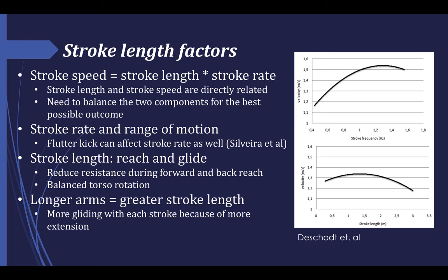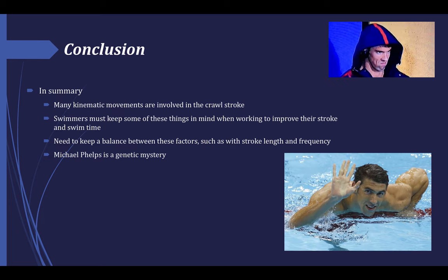Finally, if you have longer arms, you may be in luck. People with longer arms can extend their arm and shoulder further in the reach phase of the crawl stroke, meaning they get more gliding. An example of someone who has this is Michael Phelps — he doesn't have to increase frequency as much to have a significant effect on his stroke velocity. In summary, many kinematic movements are involved in the crawl stroke, and swimmers need to keep these things in mind when working to improve their stroke, swim time, and performance. They need to keep a balance between all these factors, such as stroke length versus stroke frequency. And finally, Michael Phelps is a genetic mystery, and he will be better at swimming than any of us ever will be. Thank you!